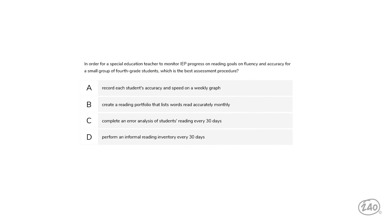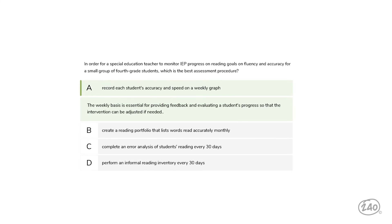Here's a question on assessment. A special education teacher is monitoring IEP progress on reading goals — fluency and accuracy — for a small group of fourth-grade students. Which of the following is the best assessment procedure? Monitoring on a weekly basis is essential for providing feedback and evaluating a student's progress so that the intervention can be adjusted if needed. Monitoring progress monthly is too much time and wouldn't be effective for adjusting instruction.